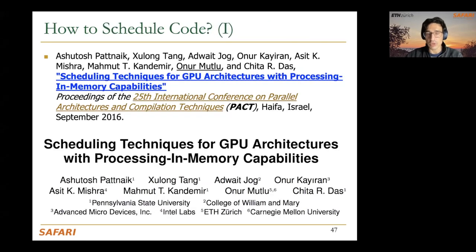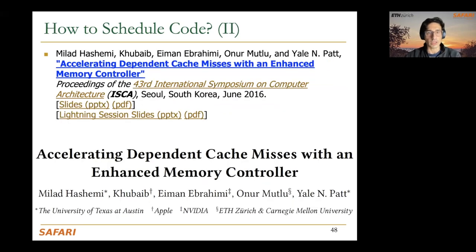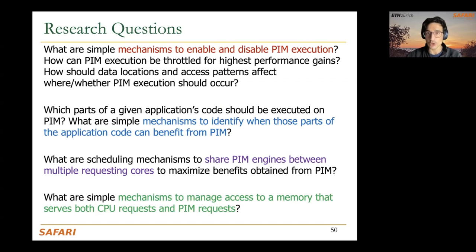You can read the TOM paper presented at ISCA 2016 for a very interesting GPU+PIM scheduling proposal. A related contemporary proposal is 'Scheduling Techniques for GPU Architectures with Processing in Memory Capabilities,' which schedules code at different granularities — creating interesting trade-offs worth comparing. Also recommended are 'Accelerating Dependent Cache Misses with Enhanced Memory Controller' and 'Continuous Runahead: Transparent Hardware Acceleration for Memory-Intensive Workloads.'